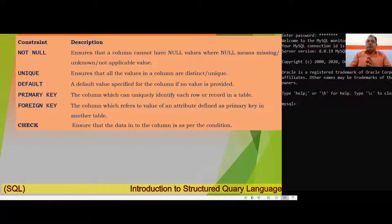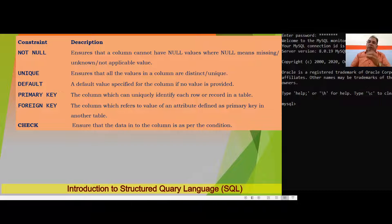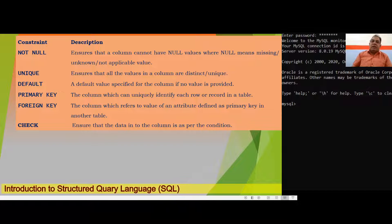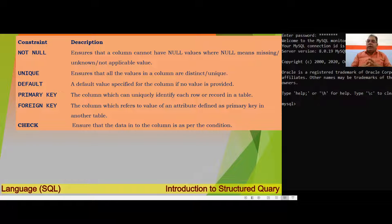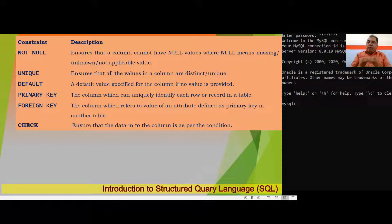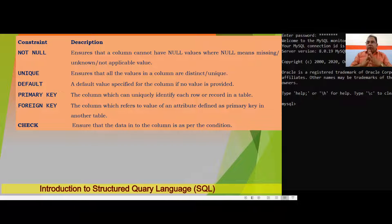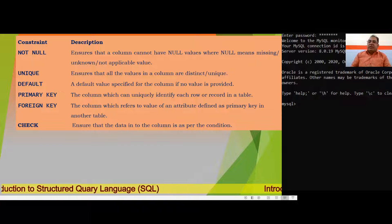NOT NULL means the attribute must have a value — it cannot remain null. UNIQUE ensures that all values in a column are distinct; no duplicate values are allowed, but the column can remain blank. DEFAULT is used when we want a default value in a column — for example, if we have a column DOJ (date of joining), we can set it to automatically fill with the current date using the DEFAULT constraint.